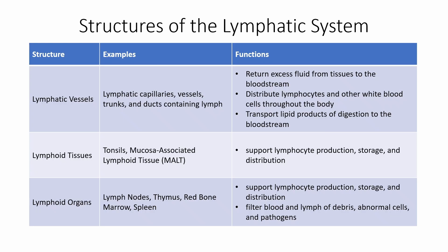We can break the main structures down into lymphatic vessels, tissues, and organs. Lymphatic vessels — the capillaries, the vessels, the ducts — are going to pull up excess fluid from the tissues and put it back in the bloodstream. They also distribute lymphocytes and other white blood cells, and help with the absorption and transportation of lipids that we get from our food.